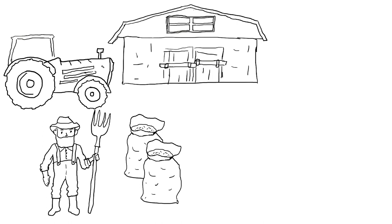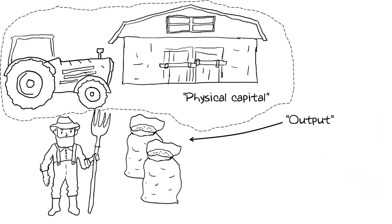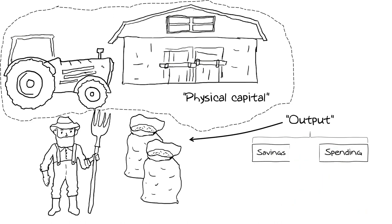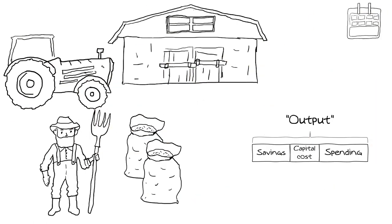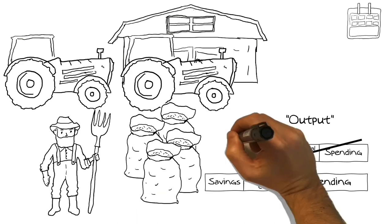Assume we have an economy that produces only one good — say wheat. To produce wheat, a farmer needs a farm, land, tractors and so on. We call the set of all production means physical capital. For a given physical capital, the farmer produces a certain amount of wheat that generates revenue called output. From this output, the farmer can choose how much to spend for utility and how much to save and invest for expanding his business. However, tractors get rusty, the farm needs maintenance — physical capital is subject to a cost.